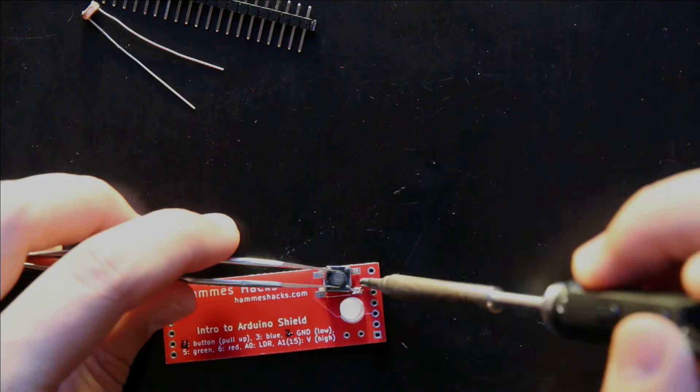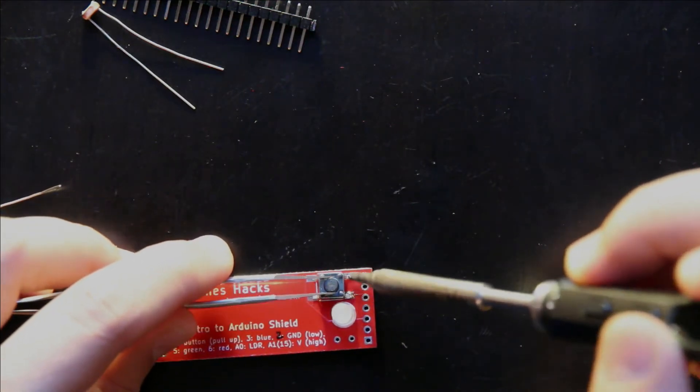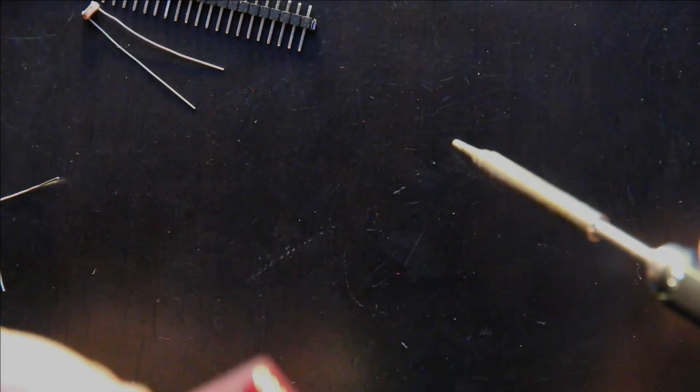And then we hold it in place and we melt the pre-tinned pad. And I did a bad job there. That's okay. Then we check that we like the alignment.